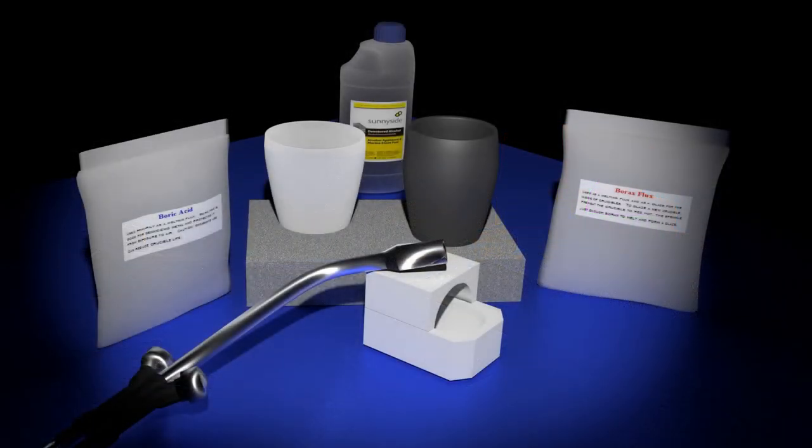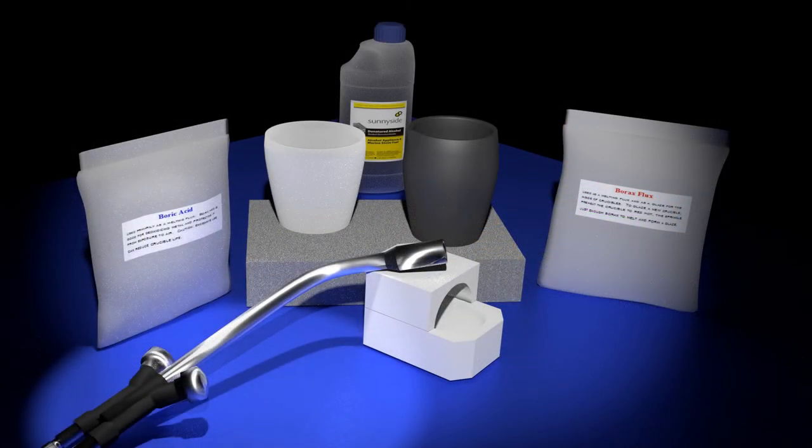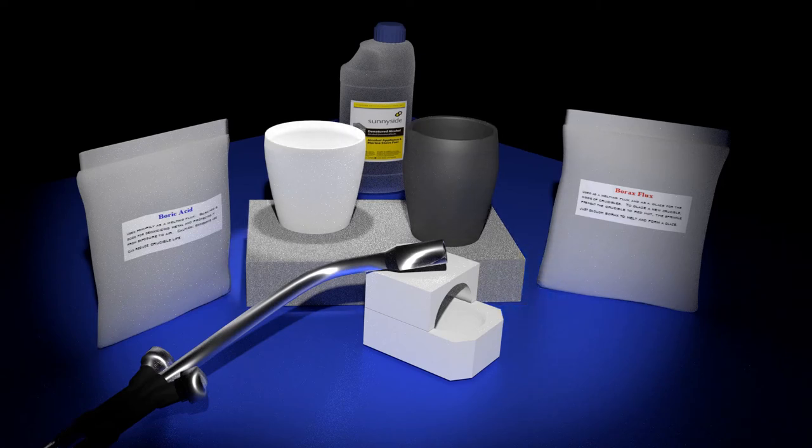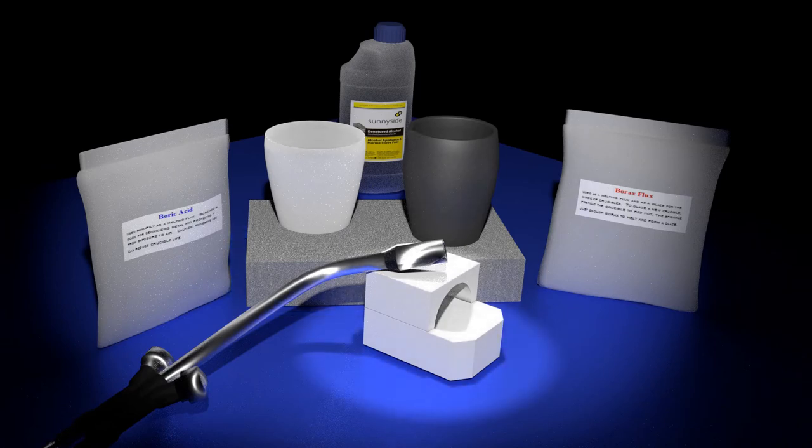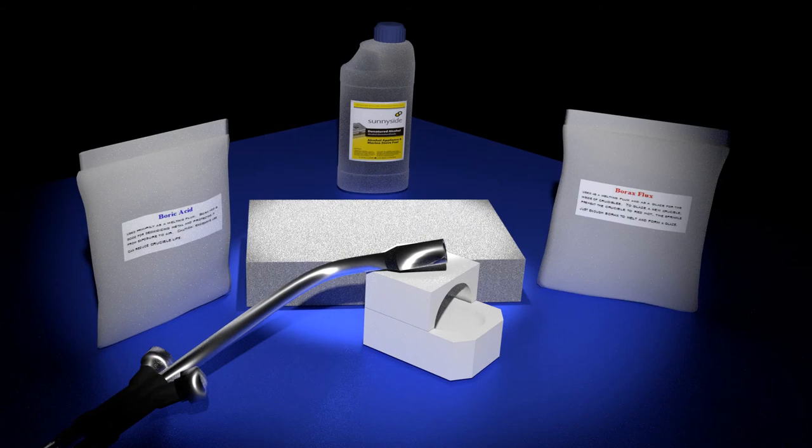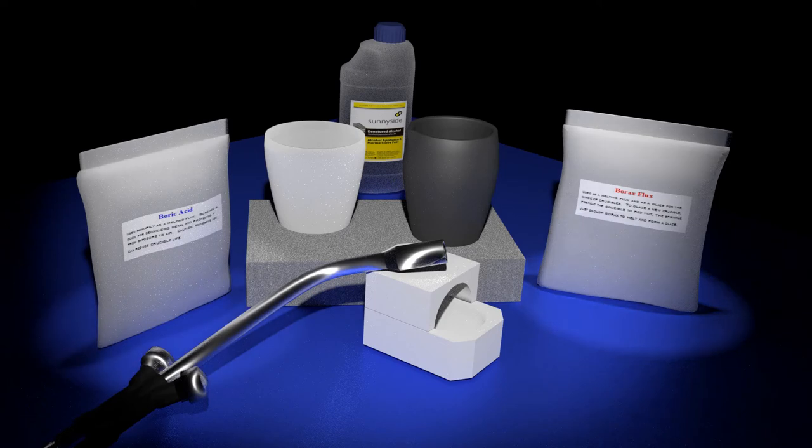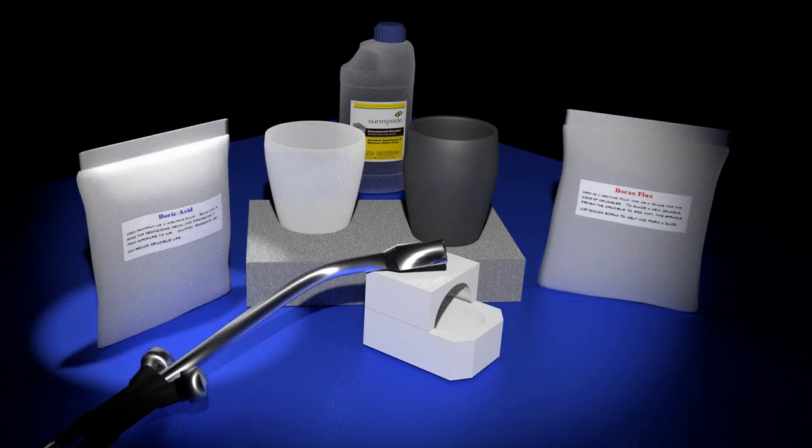Here is what you will need. Melting torch. Use a torch made for this purpose. The common propane torch simply will not provide enough BTUs to do the job. Crucible. You can use a standard clay graphite crucible, a ceramic cup shaped crucible, or you can use a burner ceramic crucible. Crucible rest. Any refractory material, like a brick or a cinder block for example, will do the job. Flux. Common fluxes that are typically used include borax, boric acid, or a combination of the two. Alcohol.